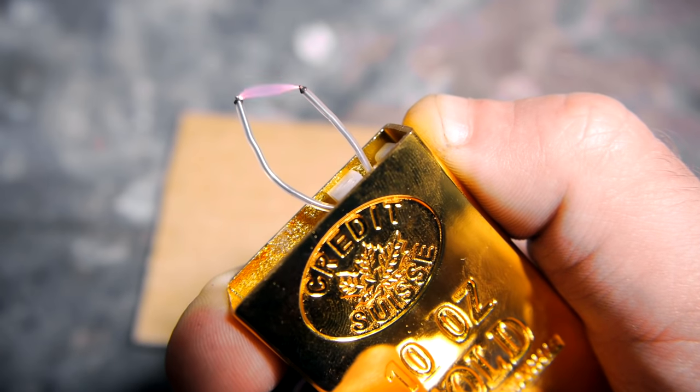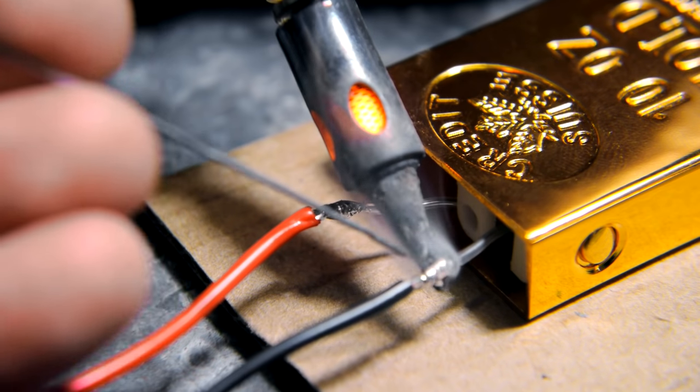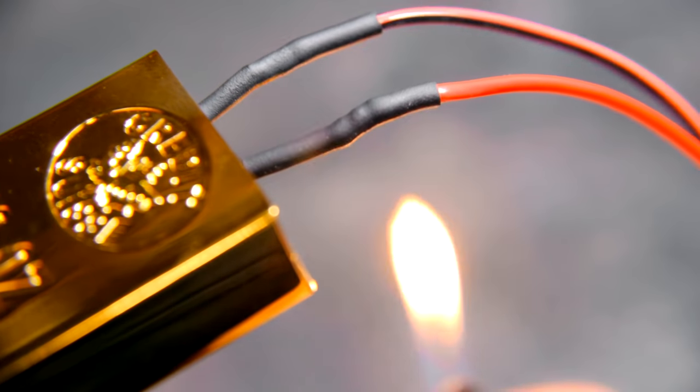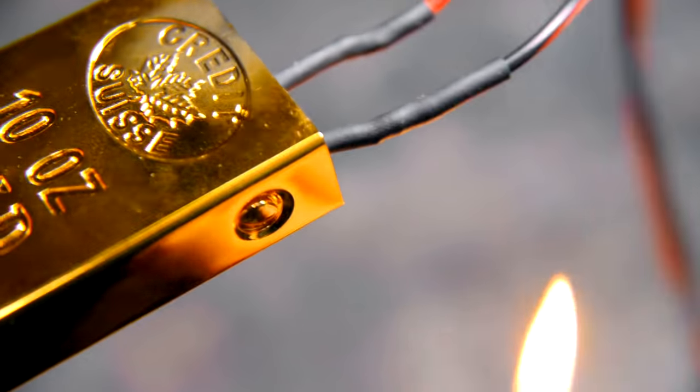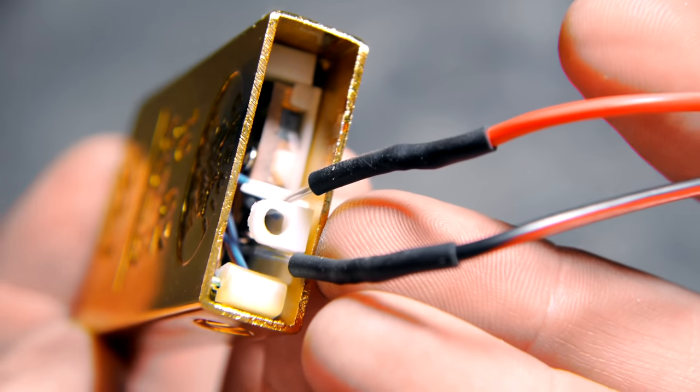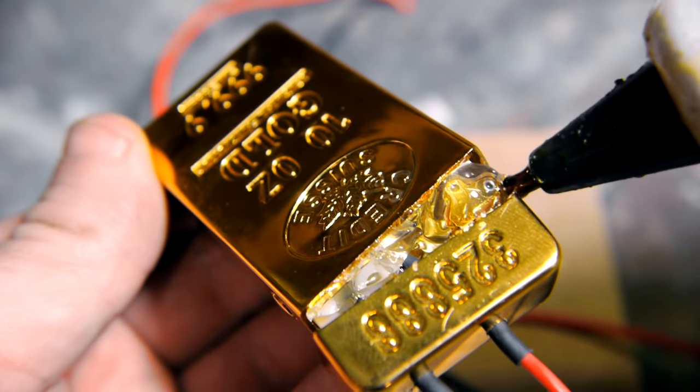These two wires will be the outputs that lead to the plasma cutter, so I'll lengthen them by splicing on some extra wire. We no longer want the spark to jump between these two connections, so some shrink wrap tubing is important to keep them insulated. For purely aesthetic purposes, I drilled two holes through the lighter's lid so it could fit back on top of the case with the wires passing through.